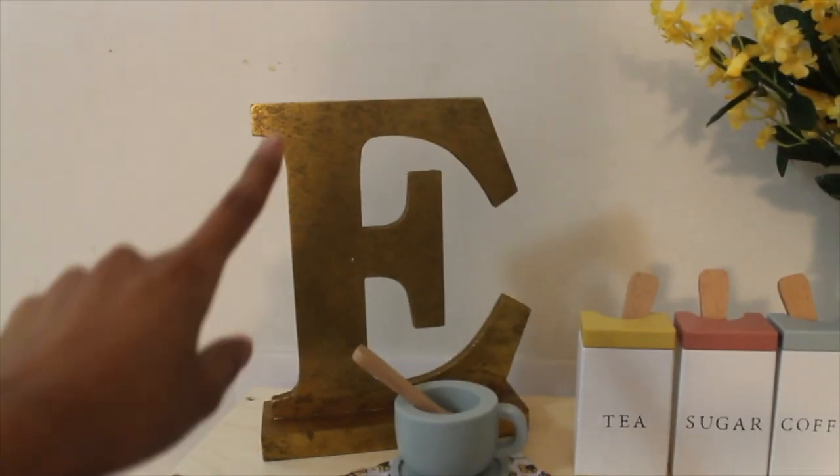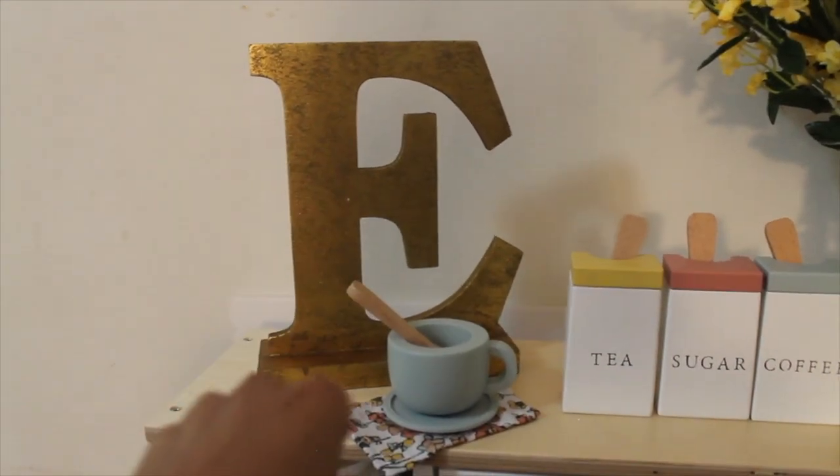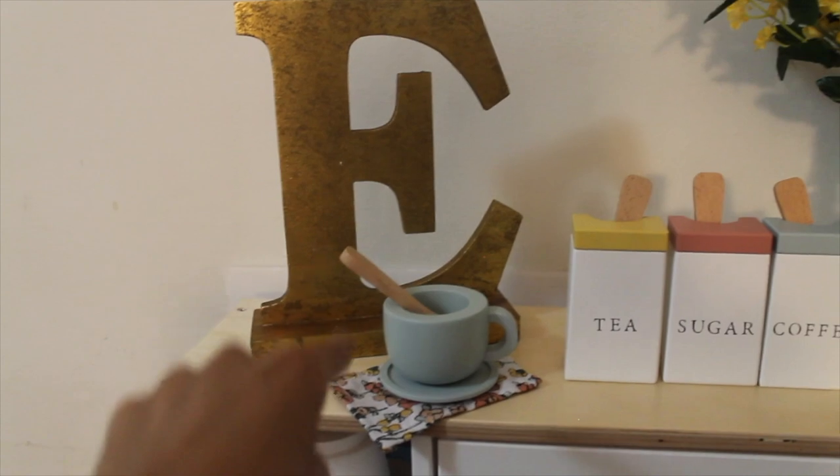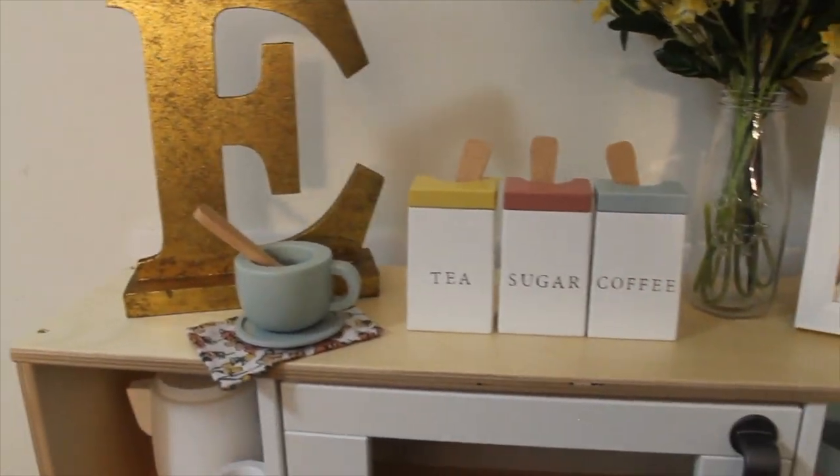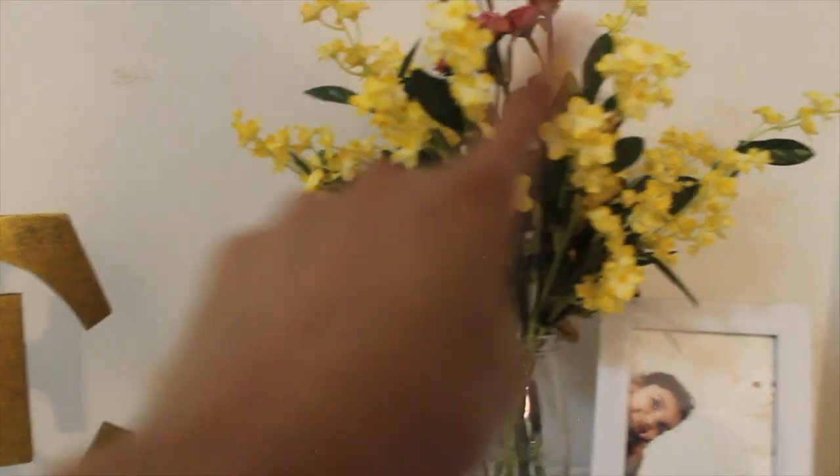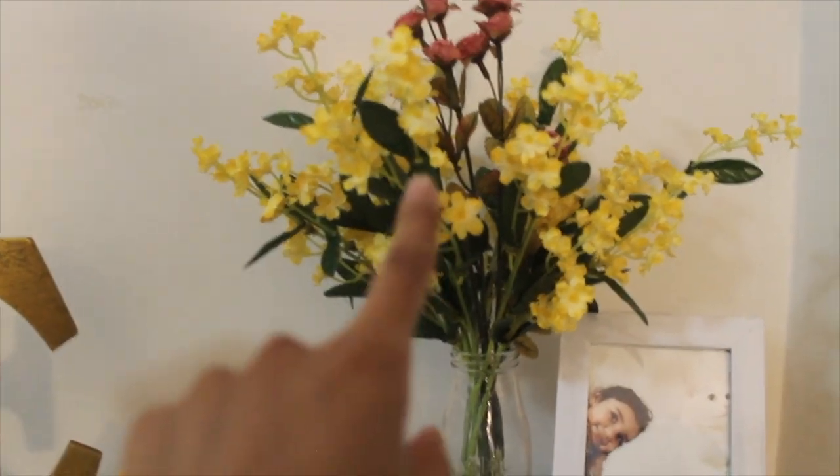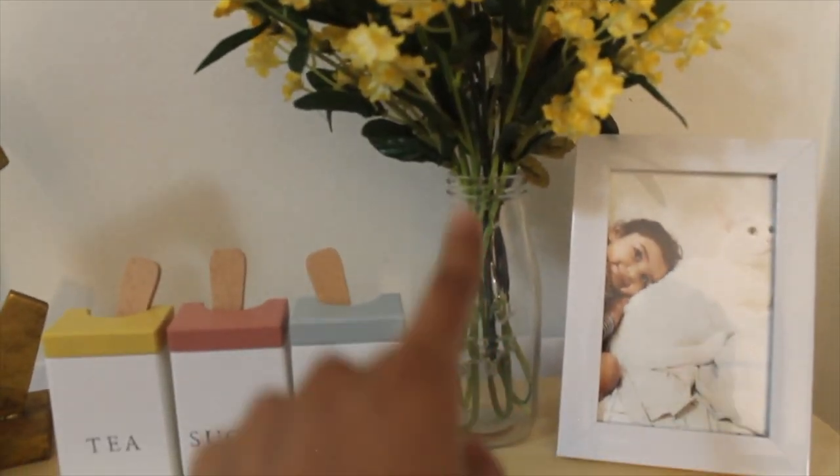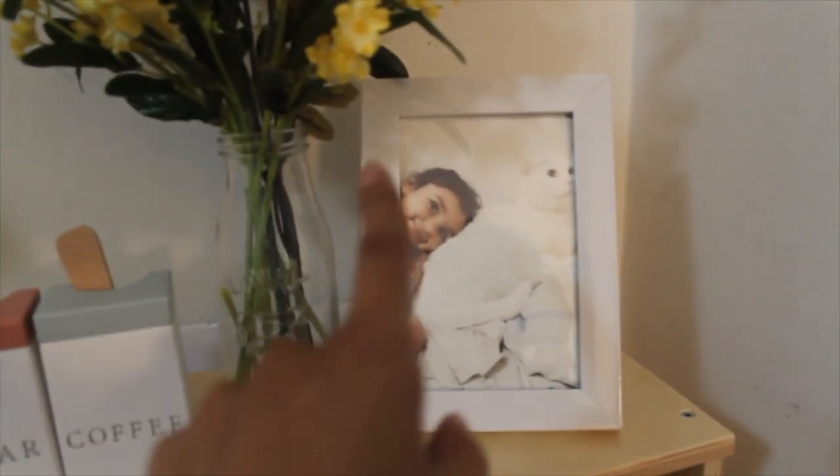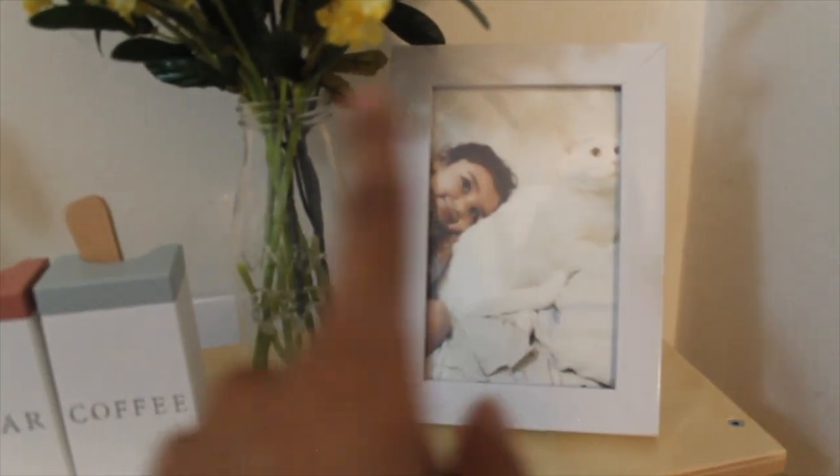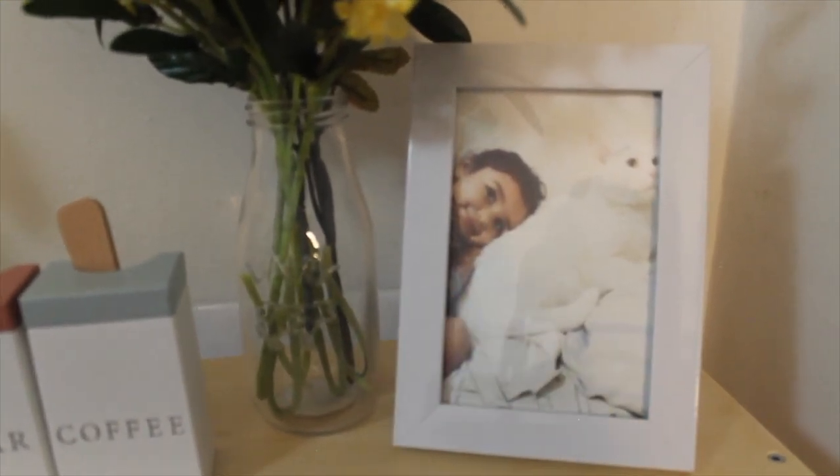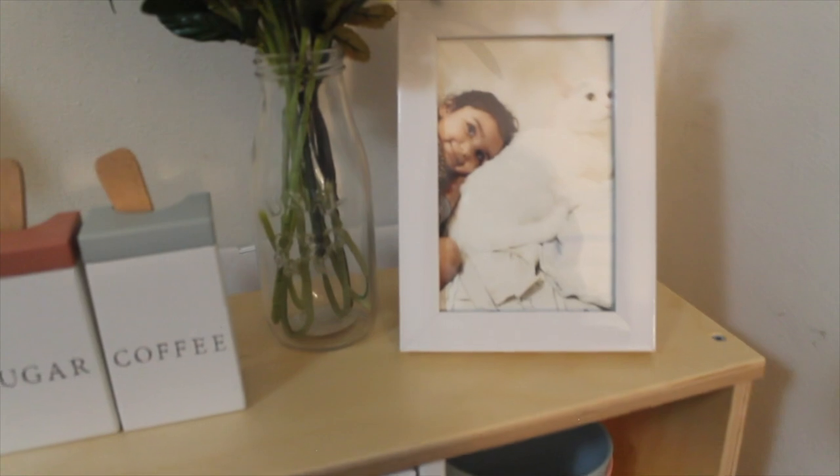We just have this letter E for her name. This letter E is from Michaels, we've used it for all her birthdays. The flowers are also from Michaels and the glass bottle. The picture frame is just from the 99 cent store and I just added a picture of her and her cat, her best friend.